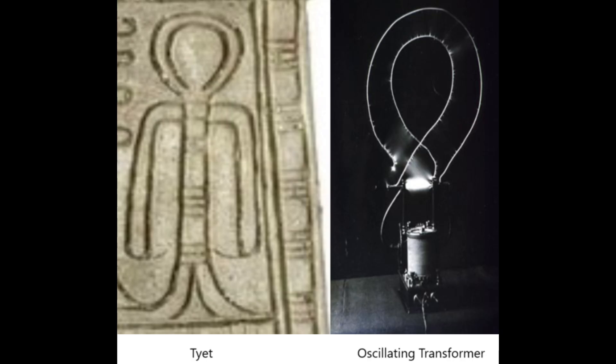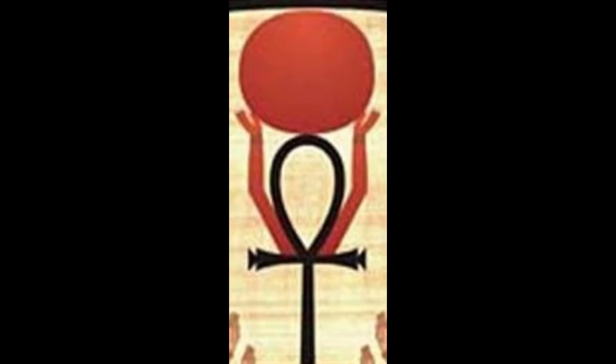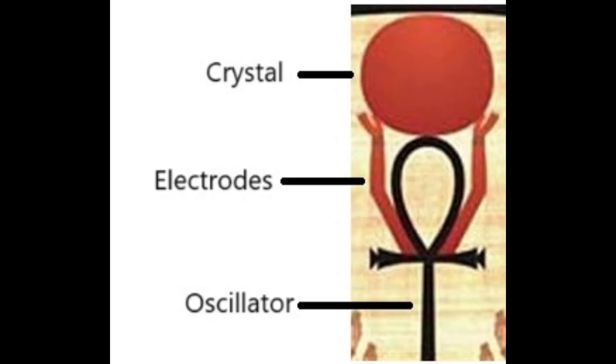The next one I want to look at comprises the Ankh, the car symbol, and a red disc. I think the red disc is supposed to represent a crystal. So overall, I'm reading this as an oscillator, some electrodes, and a crystal. Together, they give us a crystal oscillator. Here's what one of those looks like today.